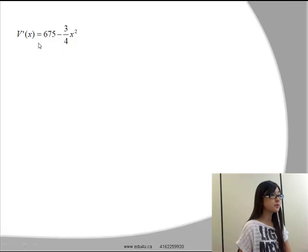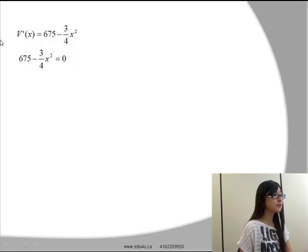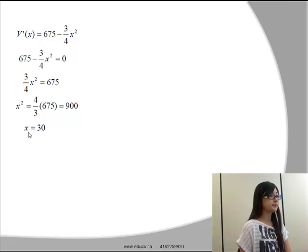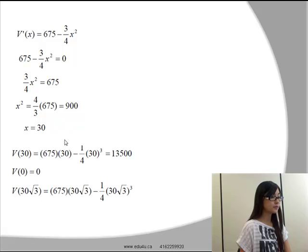The derivative of the volume will be equal to 675 minus 3/4 x squared. And if we want to find the maximum, we have to make the derivative of volume equal to 0. If we solve, we'll get x is equal to 30.